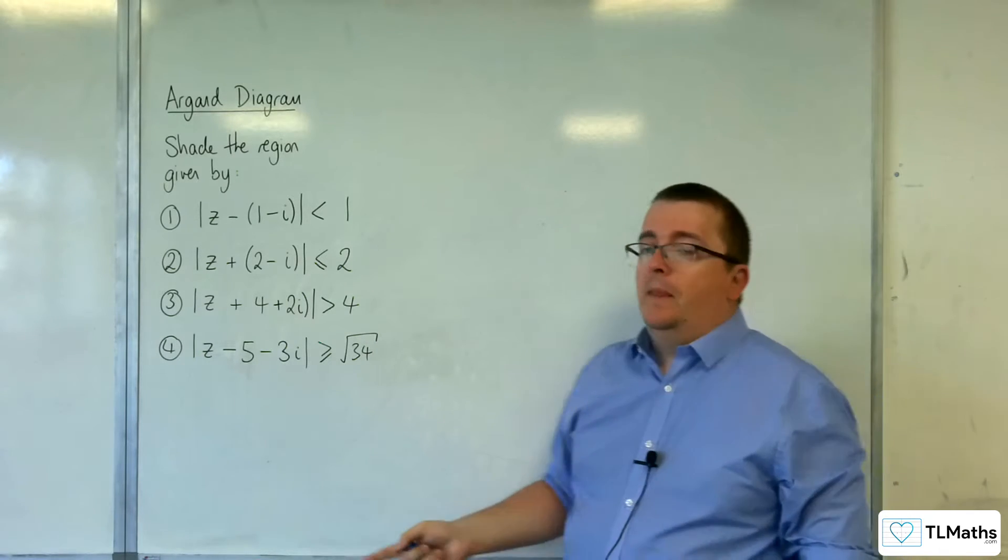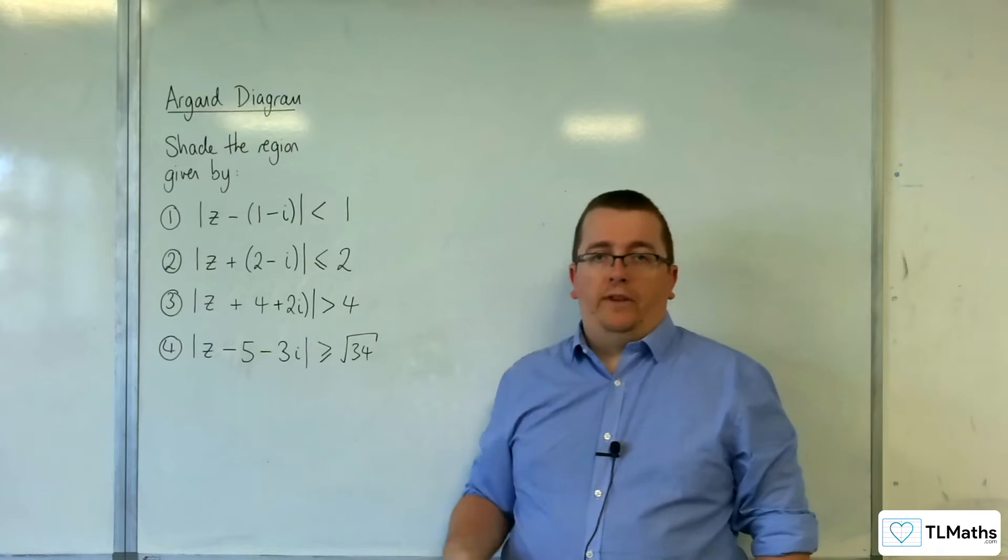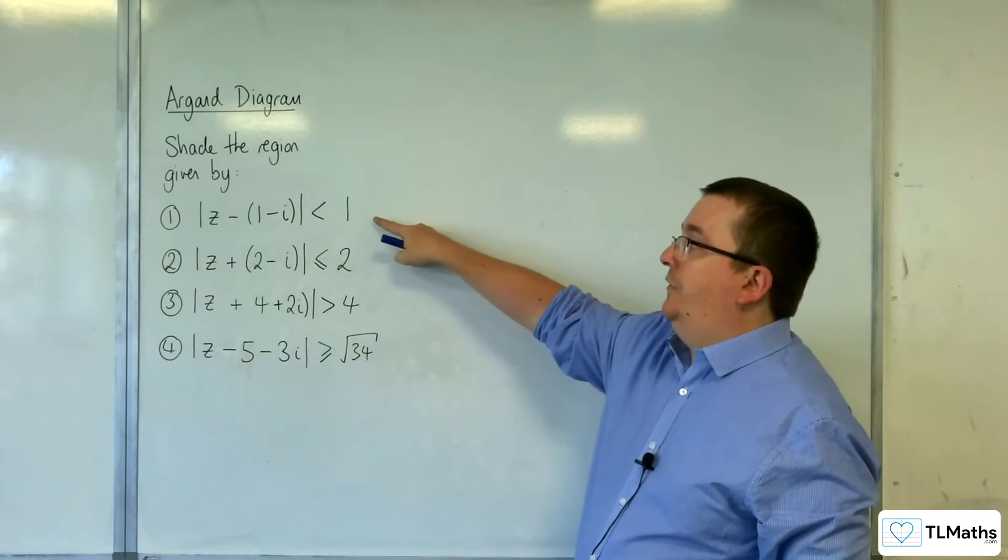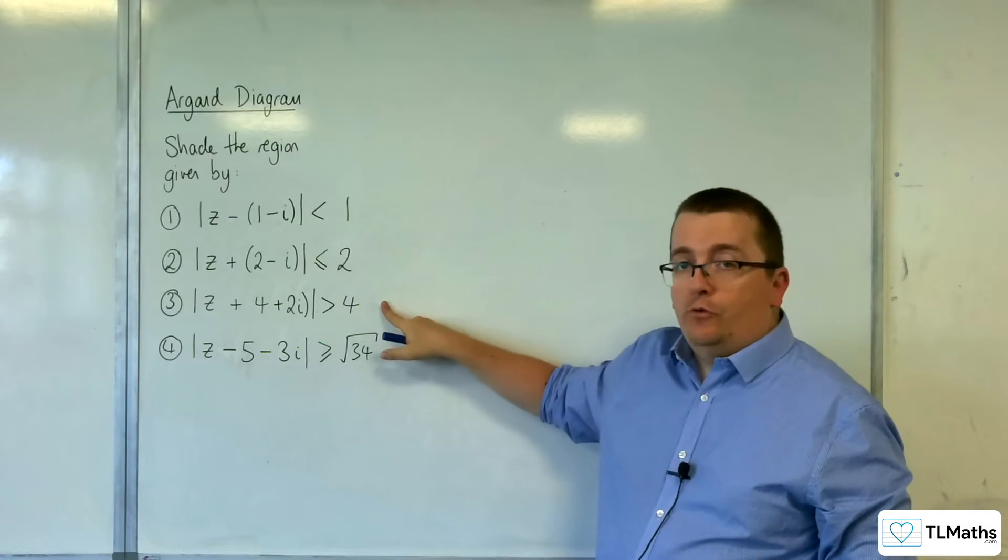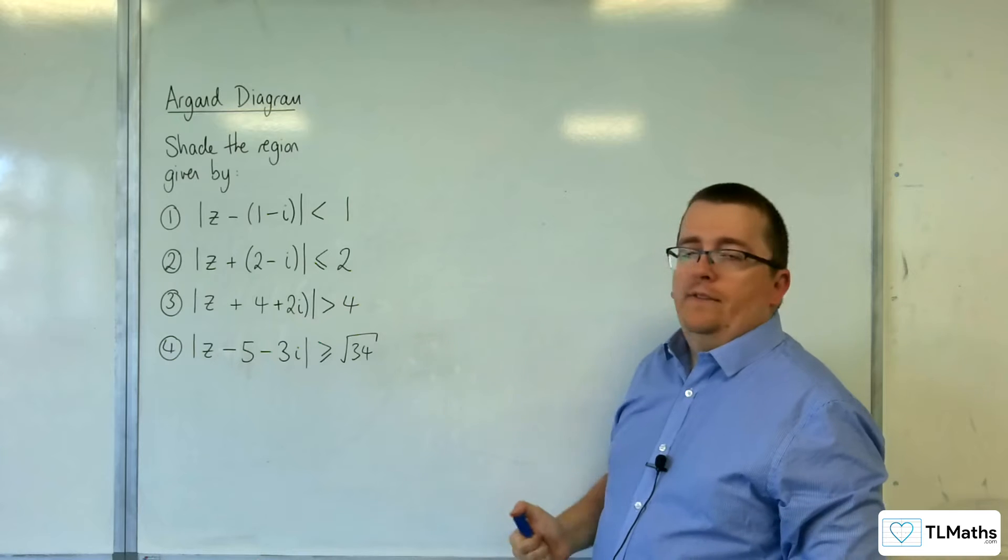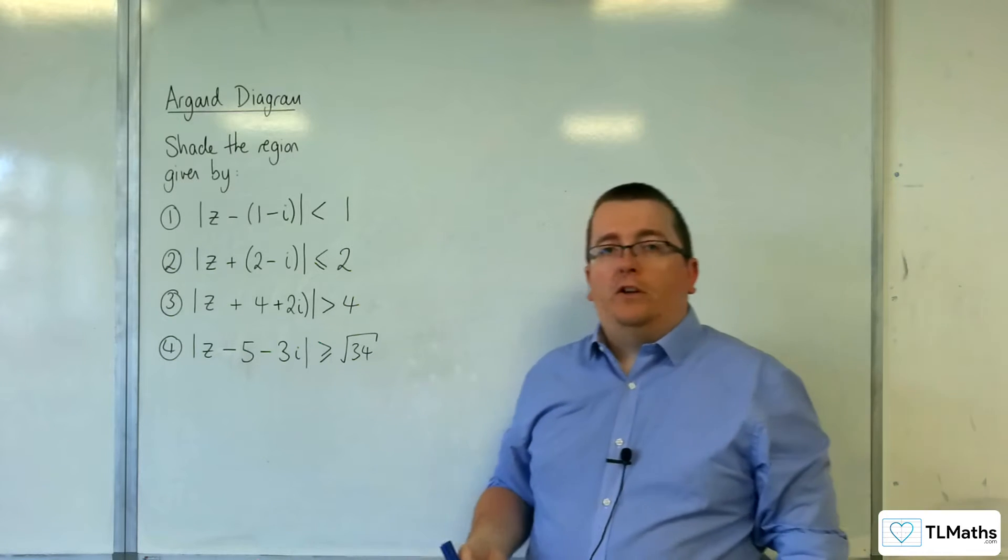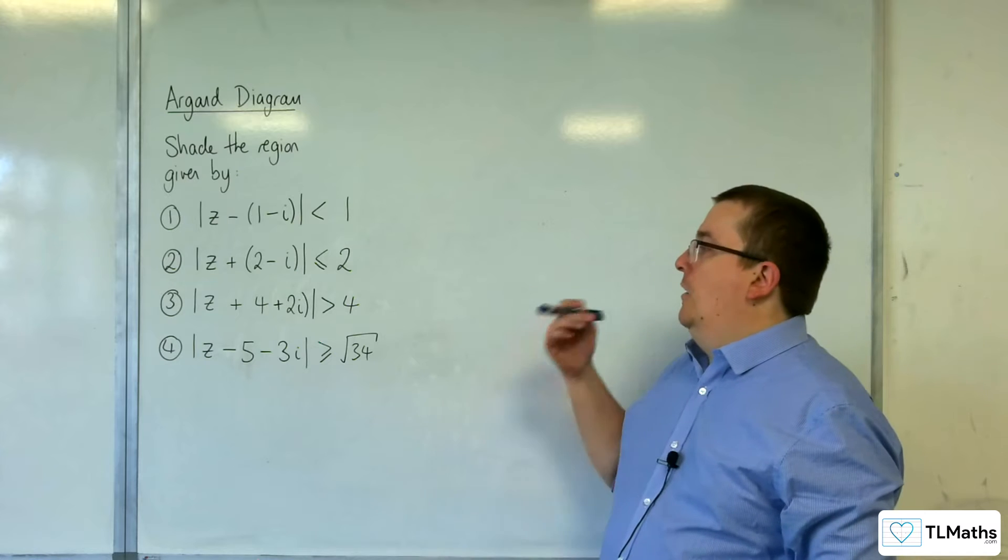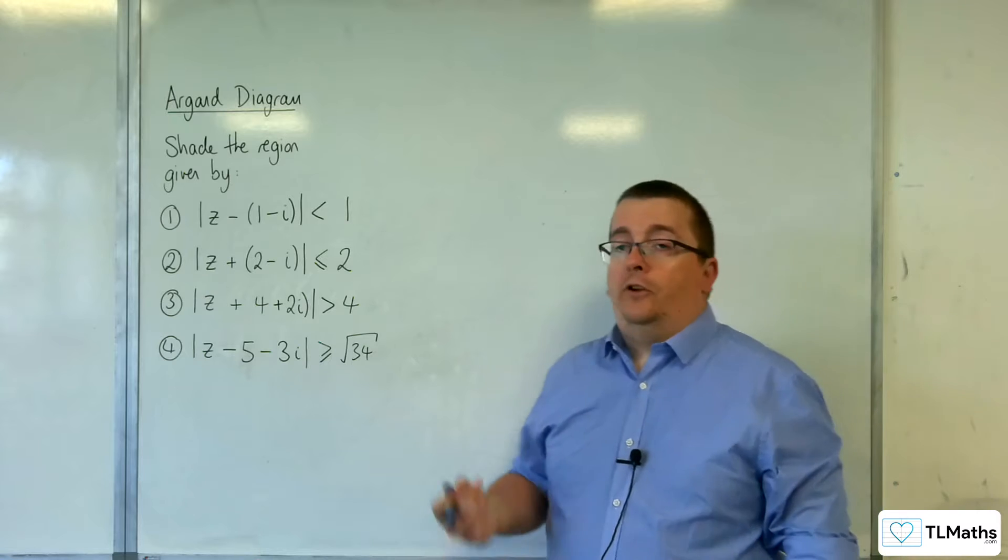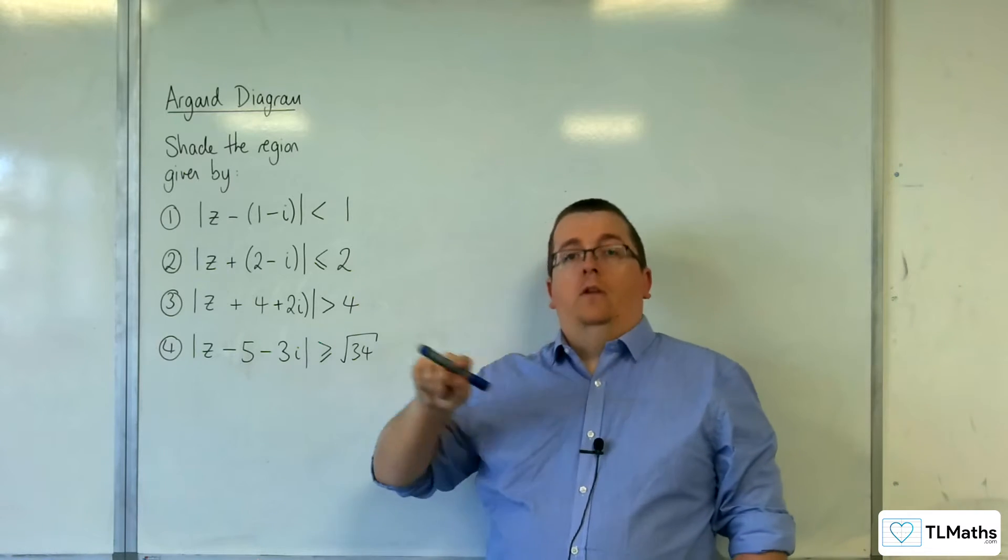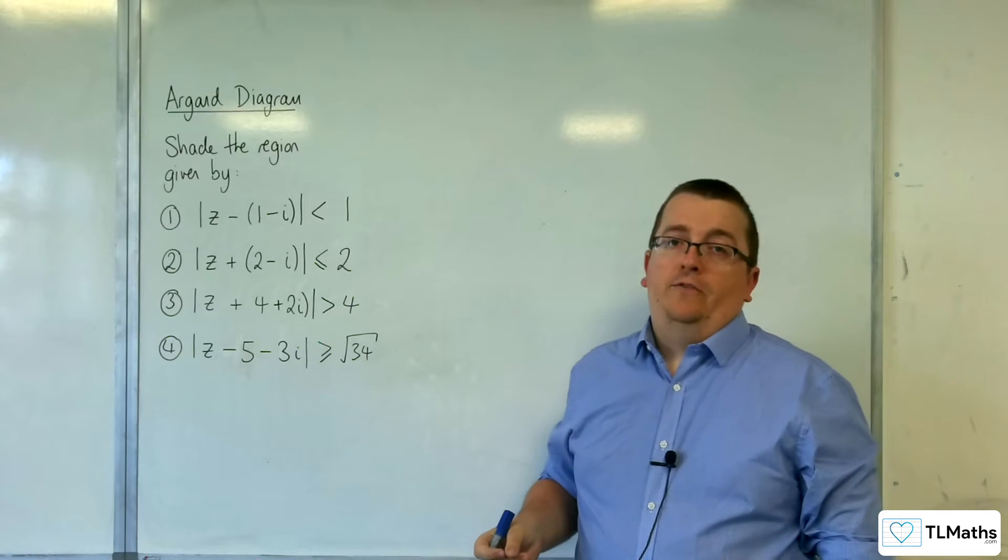So the first thing's first. If you've got a strict inequality, which I mean by a less than or a greater than, so in questions 1 and 3, then we're going to use a dotted line to represent the circle in those cases. For questions 2 and 4, because we've got less than or equal to or greater than or equal to, and so you can actually be on the edge of your circle, on the circumference, we're going to use a solid line for that.